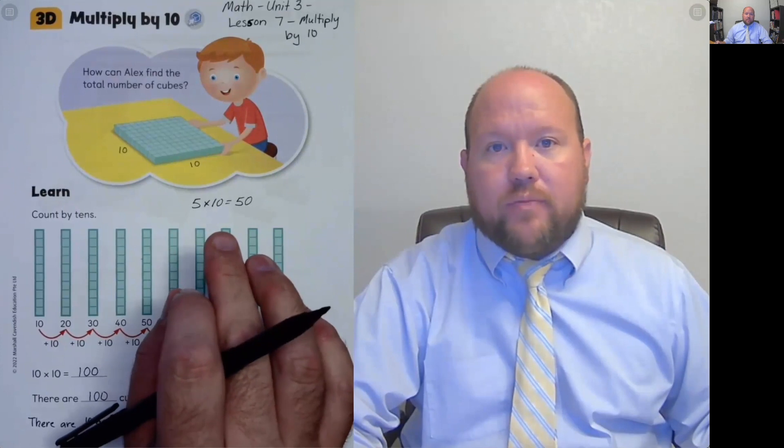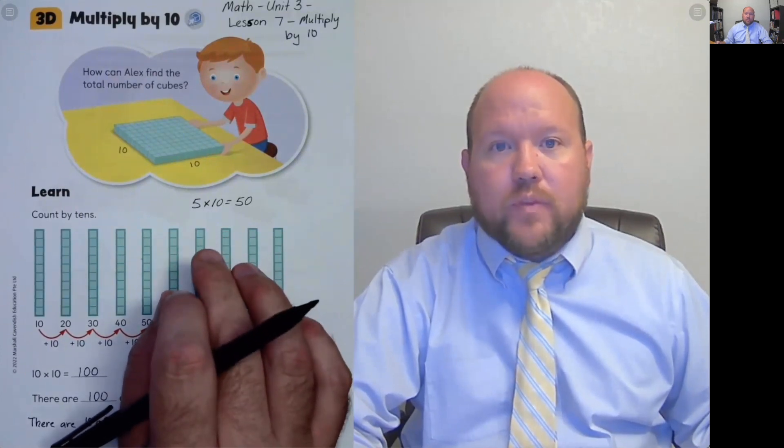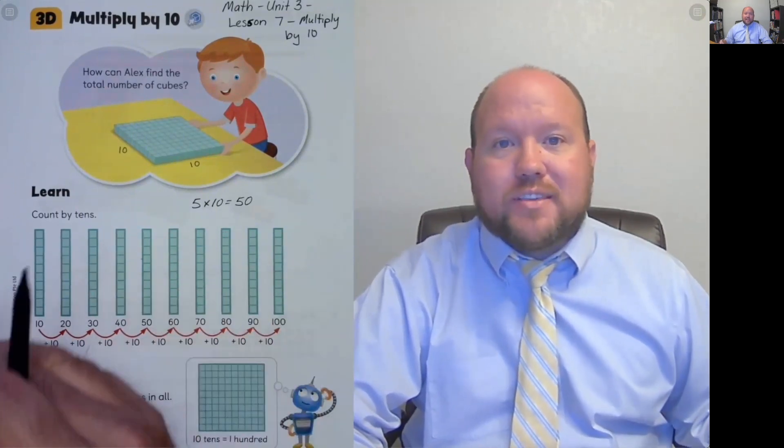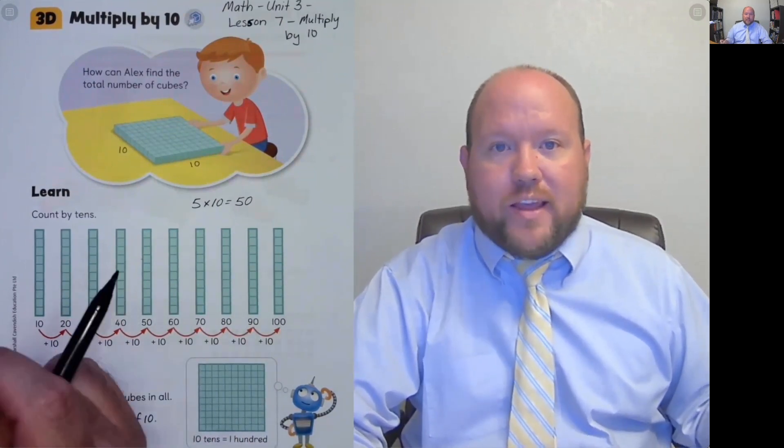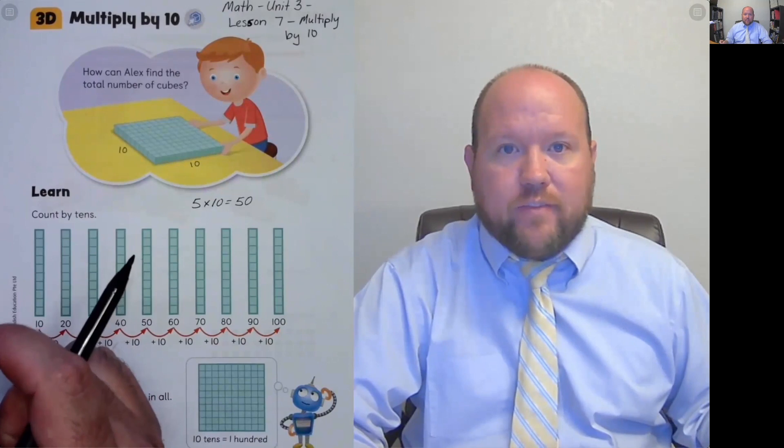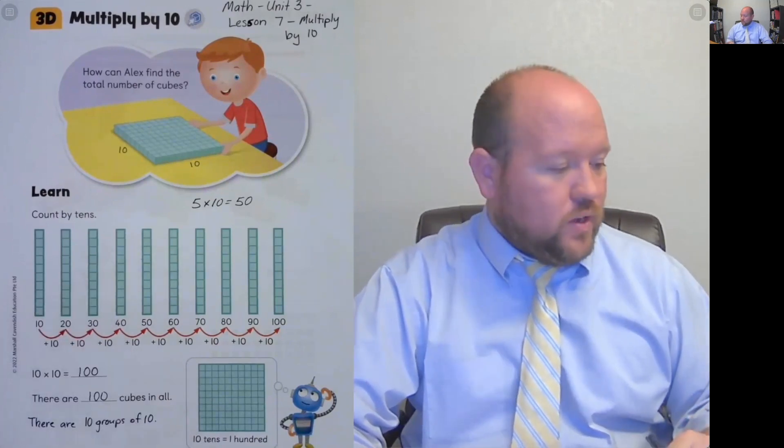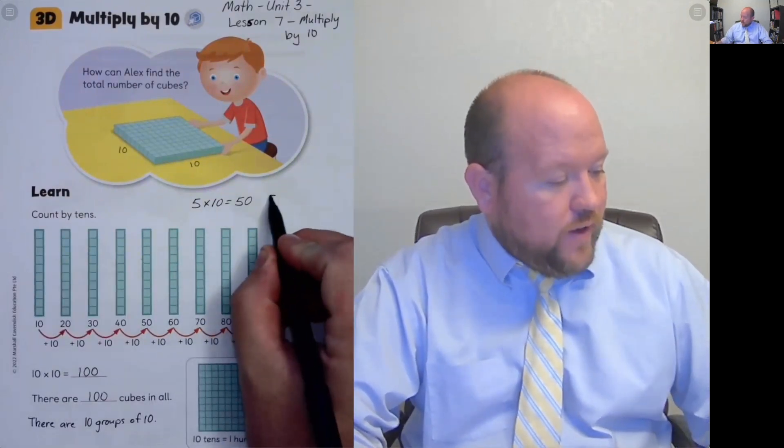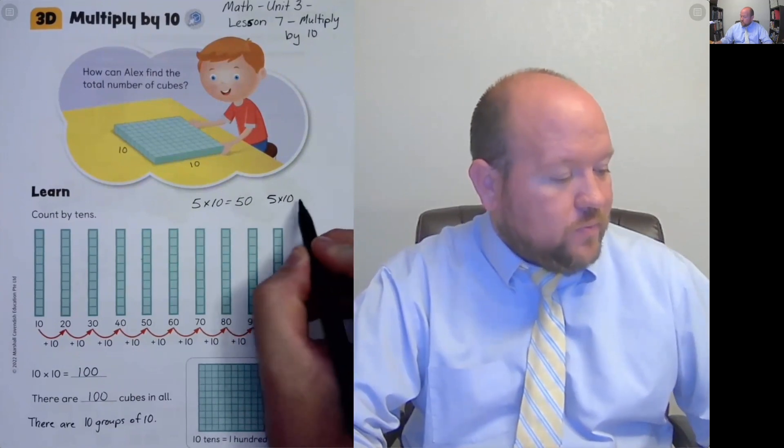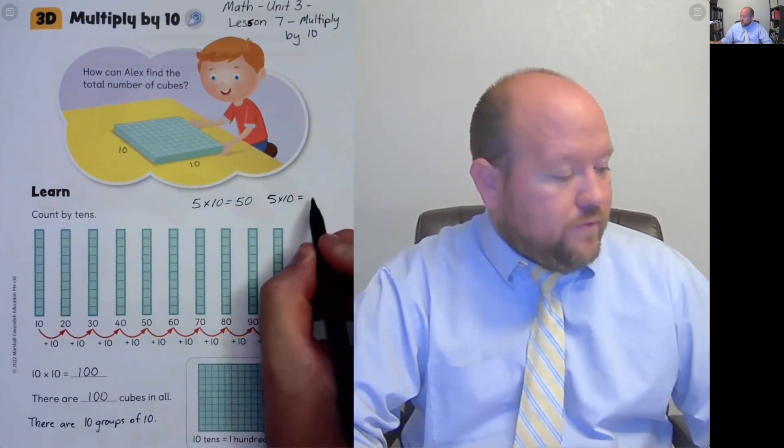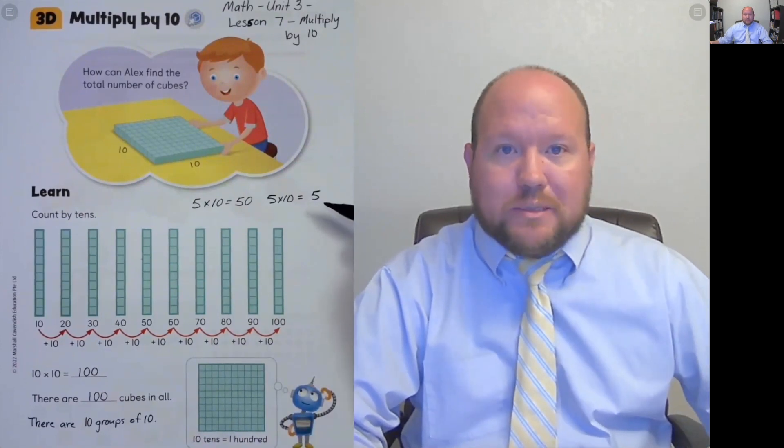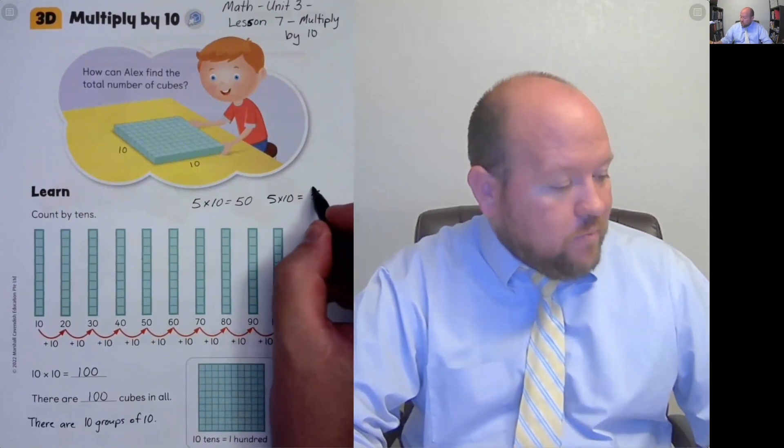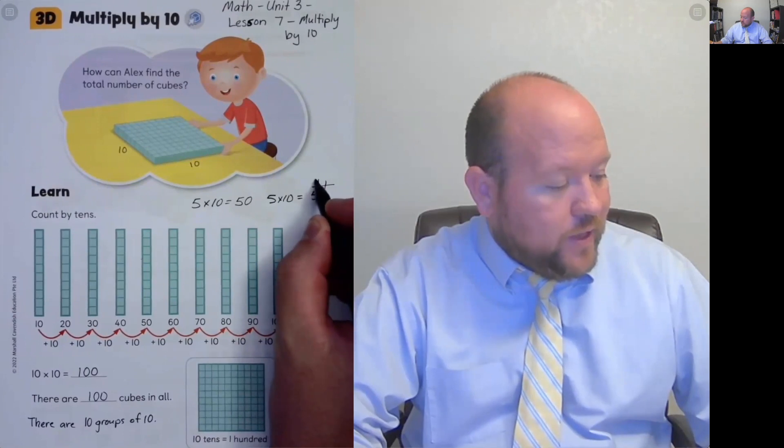The way I want you to think about it that I think is more helpful is instead of thinking of if I just add a zero, I want you to think about moving the place value of the 5 one to the left. So 5 times 10 equals 5.